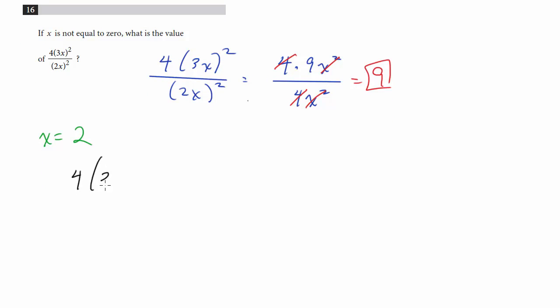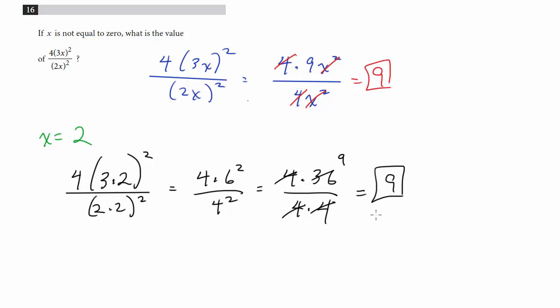So 4 times 3 times 2 squared over 2 times 2 squared. This is going to be 4 times 6 squared over 4 squared. So this is 4 times 36 over 4 times 4. I'm just going to leave them unfactored so we can cancel. The 4 cancels the 4, the 4 goes into the 36, leaves 9. So again, we get 9.